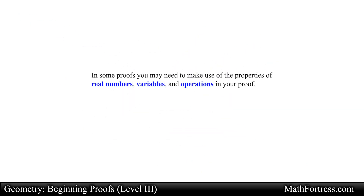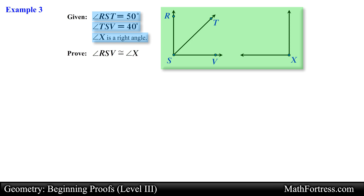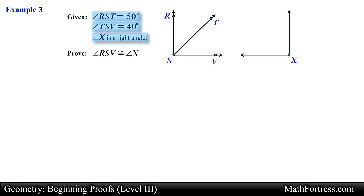In some proofs you may need to make use of the properties of real numbers, variables, and operations. Let's illustrate this with the next example. Given that angle RST is 50 degrees, angle TSV is 40 degrees, and angle X is a right angle, prove that angle RSV is congruent to angle X. Here we are given three statements along with a diagram and are asked to prove that two angles are congruent. As always, let's start by marking the given information on the diagram: angle RST measures 50 degrees, angle TSV measures 40 degrees, and angle X is a right angle.